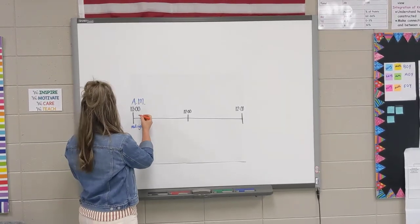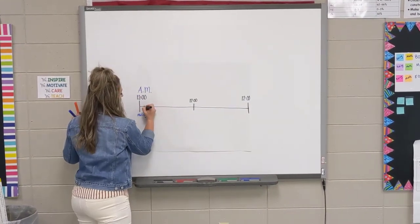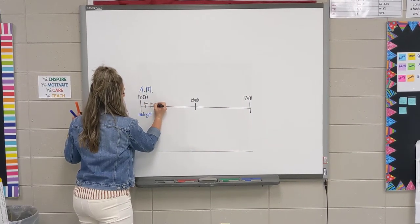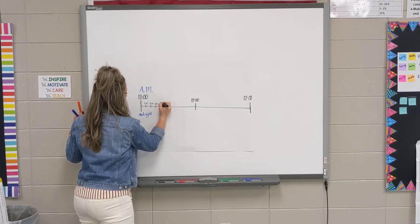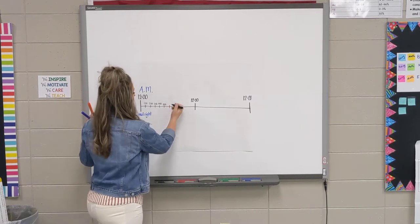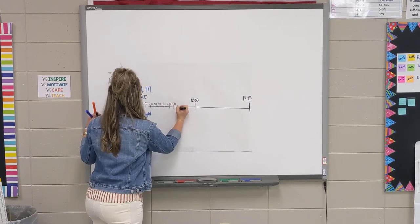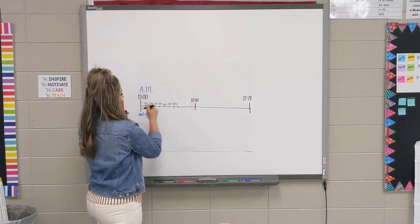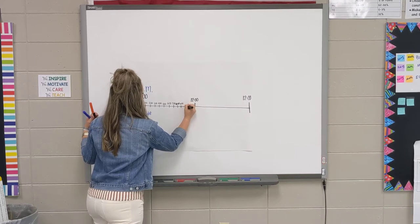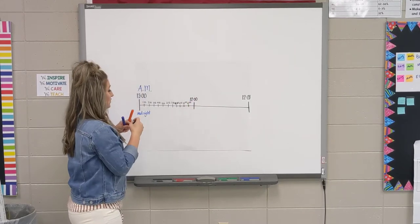When we have a.m., we can start counting. It goes to 1 o'clock a.m., 2 o'clock, 3 o'clock, 4 o'clock, 5 o'clock. About 5 or 6 o'clock, you are probably getting up to head to school. It starts — it's nighttime. 8 o'clock, 9 o'clock, you're at school. 10 o'clock, mid-morning, 11 o'clock, and then 12 o'clock.